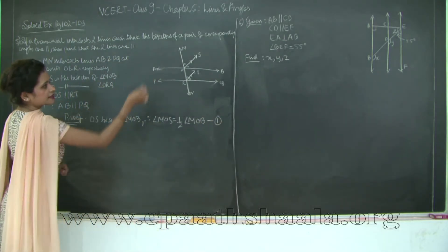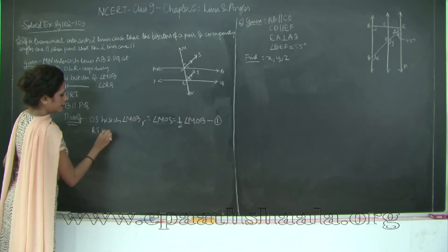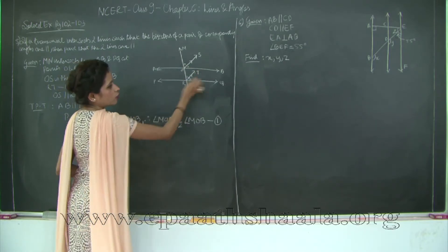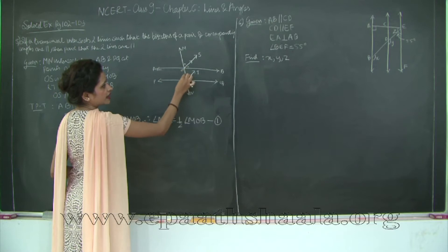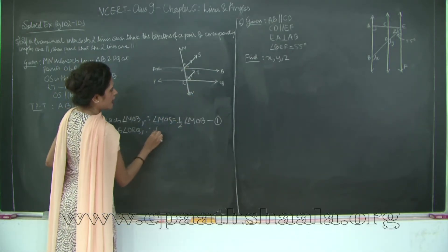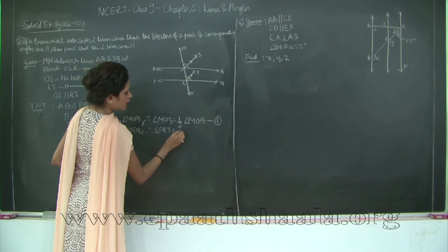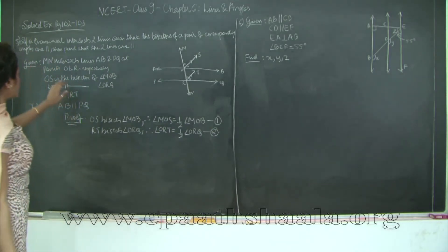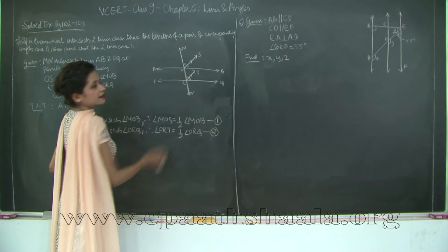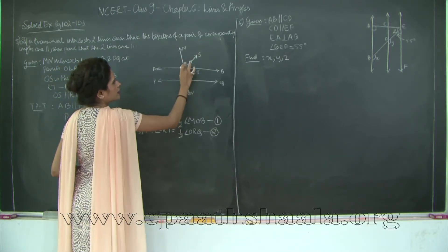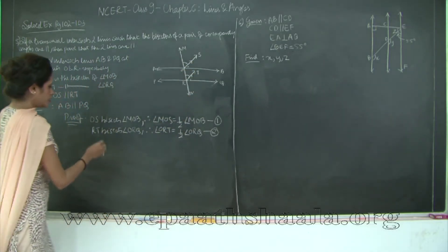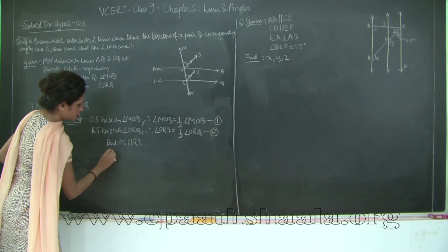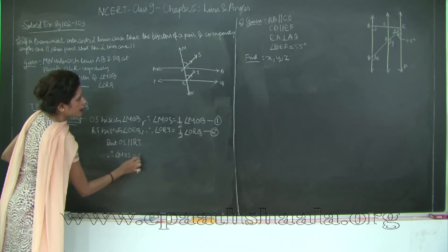Similarly, RT bisects angle ORQ. Therefore, angle ORT is equal to half of angle ORQ, because these two half-angles are equal and together form the full angle ORQ. I will mark this as statement 2. Now, OS is parallel to RT, therefore angle MOS is equal to angle ORT — because they are corresponding angles. I will mark this as statement 3.